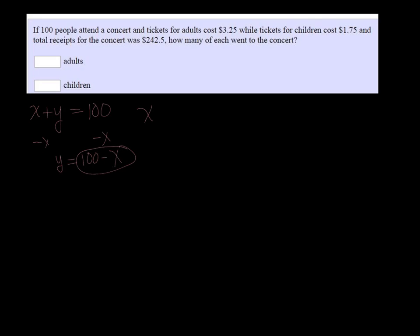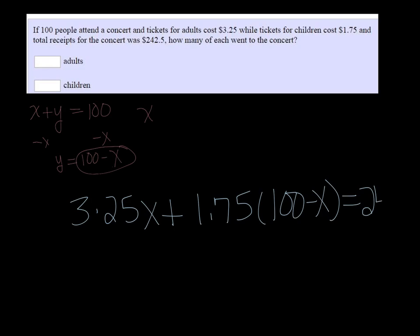So we have the adults are $3.25, so 3.25 times X, and then plus the cost of the children is $1.75, and now remember that's 100 minus X, is going to equal $242.50.